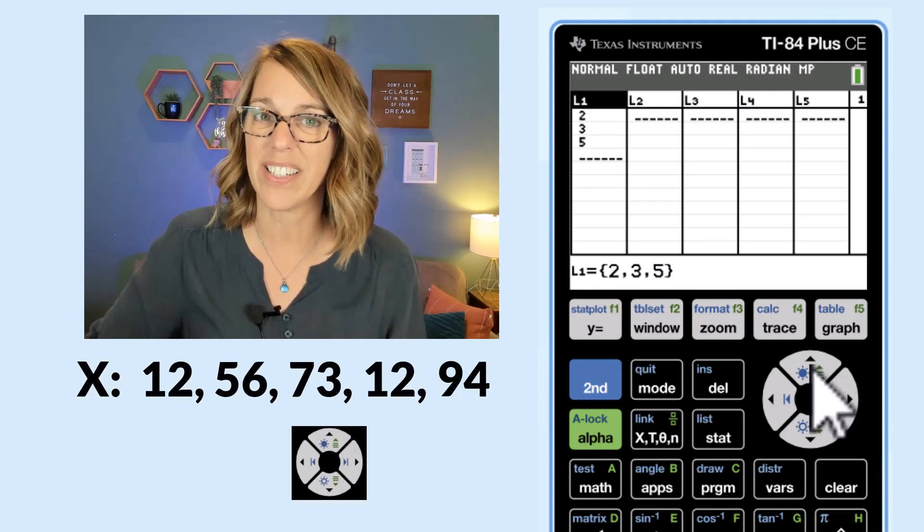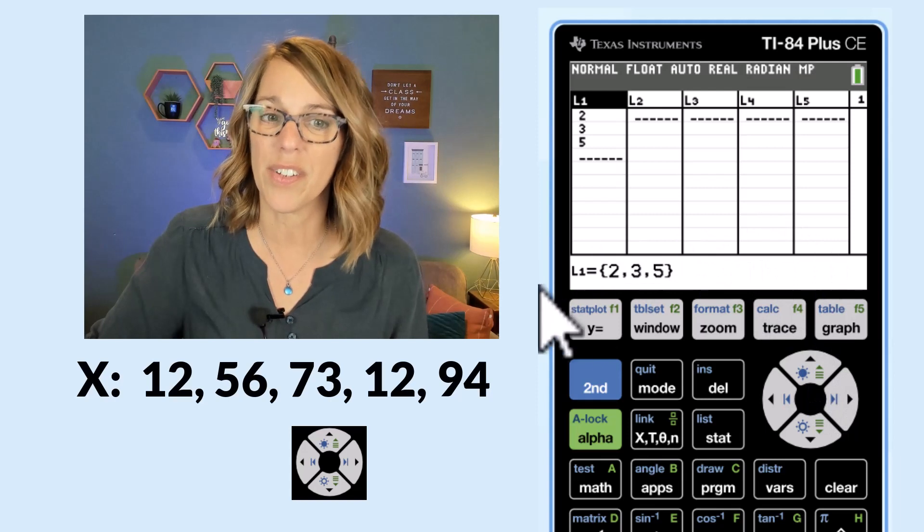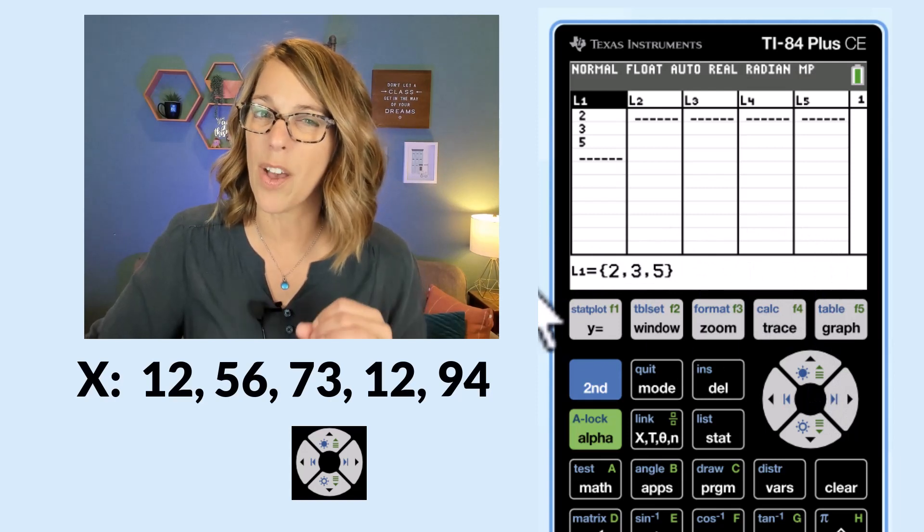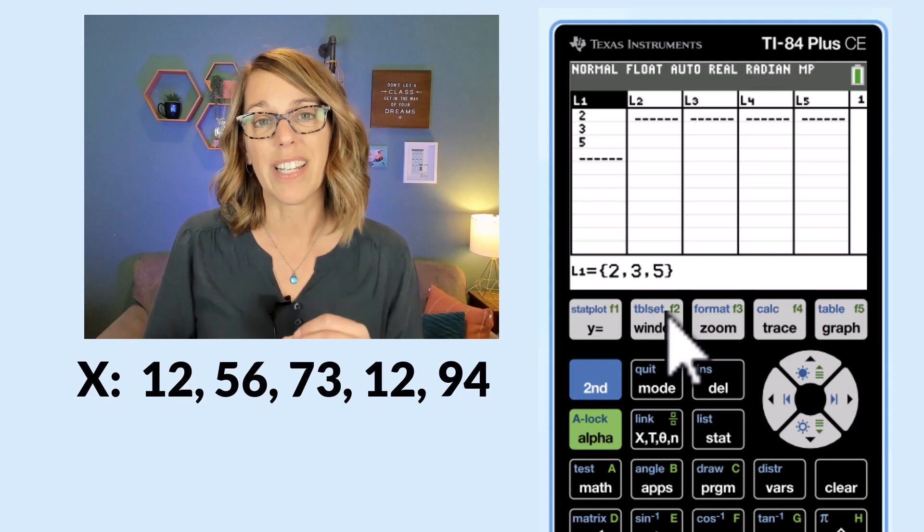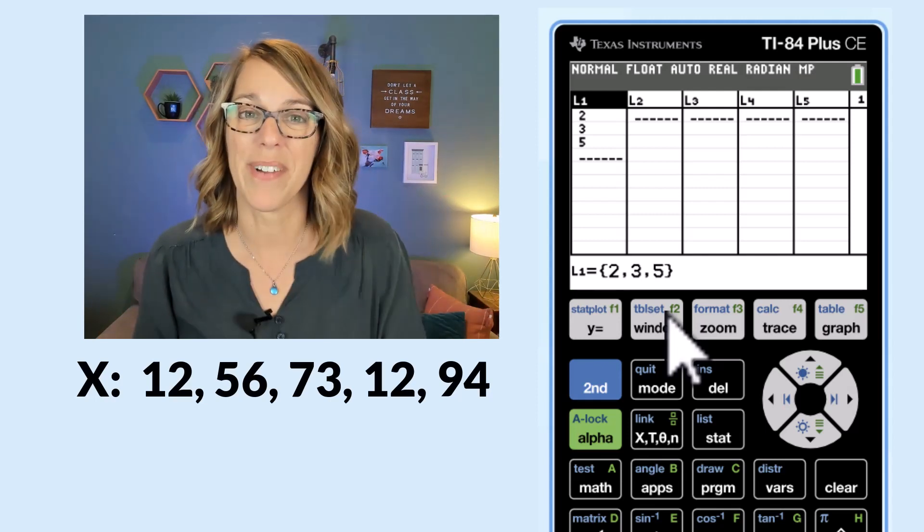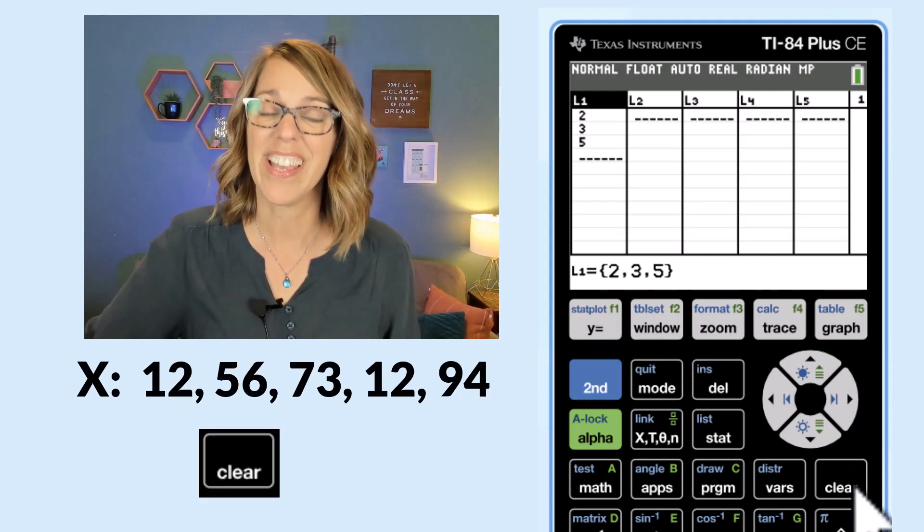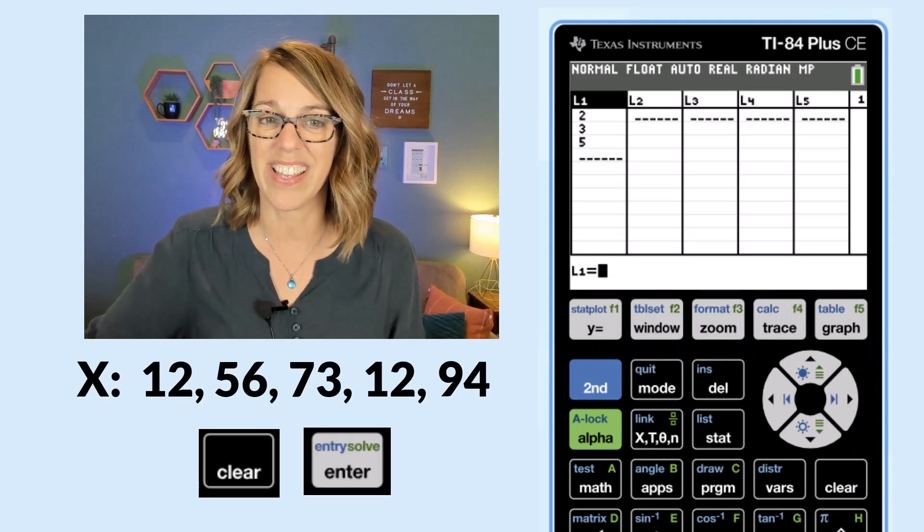To do that I'm going to arrow up to the list name and then you can see down here at the bottom of the screen it says L1 equals and then it's got those data values. That means that I'm ready to clear the list. Not delete but I want to go ahead and clear it by hitting that clear button and then enter.